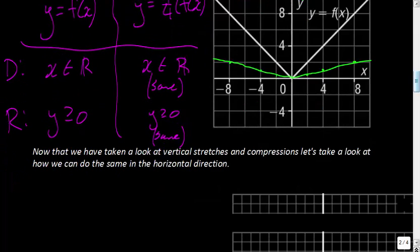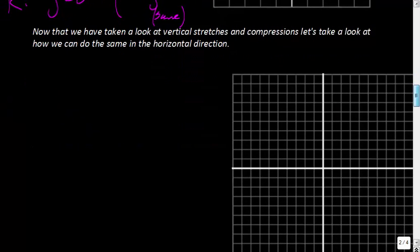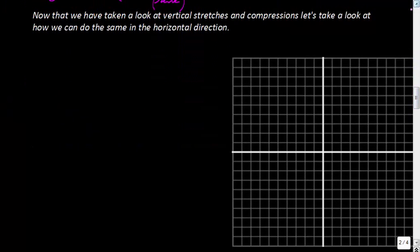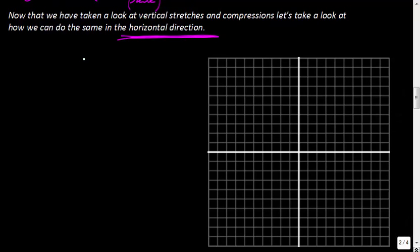Now that we've looked at vertical stretches and compressions, let's look at how we can do the same in the horizontal direction. First, consider the function y = x³. Let's go and graph that original function. If you put in 0 for x, 0³ = 0, so we have the ordered pair at (0, 0).